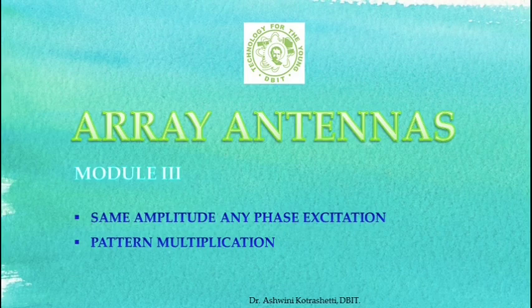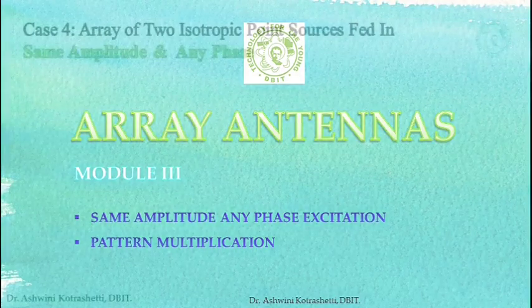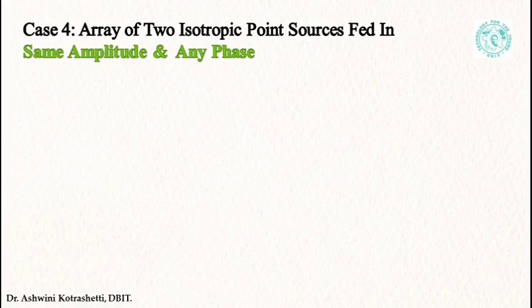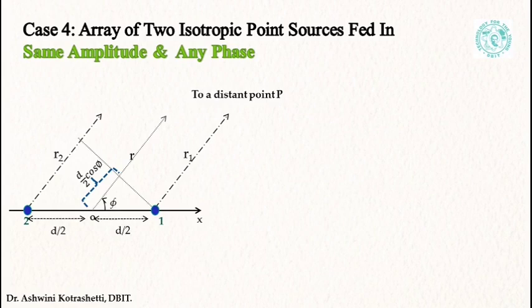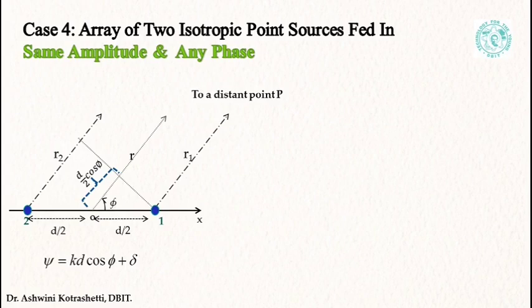Let's now proceed towards a more general situation. Consider the case of two isotropic point sources of equal amplitude but of any phase difference delta. The arrangement of the sources remains the same as before. The total phase difference psi between the two fields from source one and source two at a distant point P in the direction of phi will be given by psi equals kd cos(phi) plus delta, where delta is the phase difference added between the two sources.